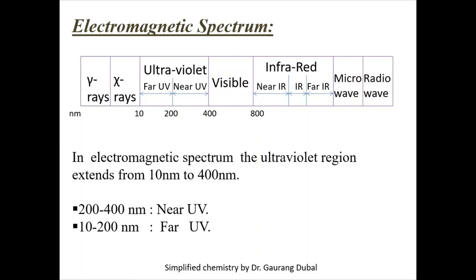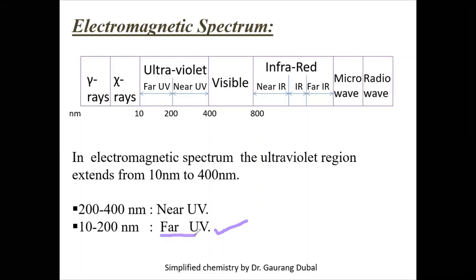In the electromagnetic spectrum, the UV region is placed between 10 nanometers to 400 nanometers. So 10 to 400 nanometers is the area where we find the wavelength of UV Spectroscopy. In this area, 10 to 200 nanometers is known as the far UV region, and sometimes we also call this region the vacuum region.